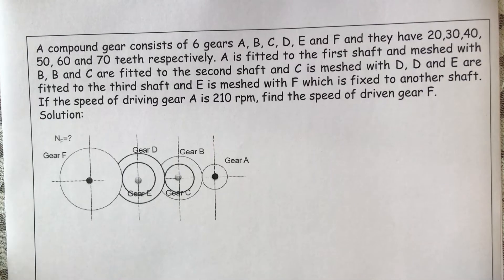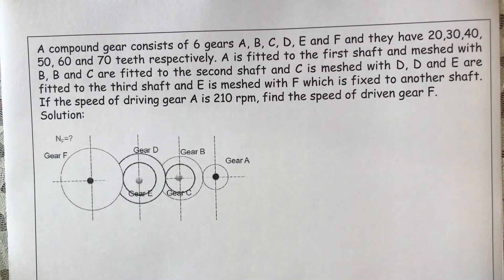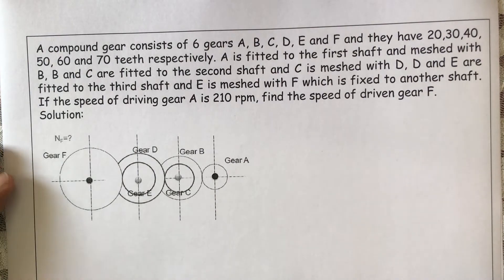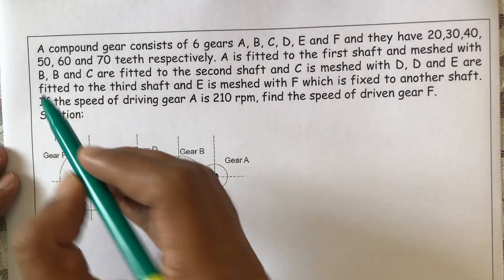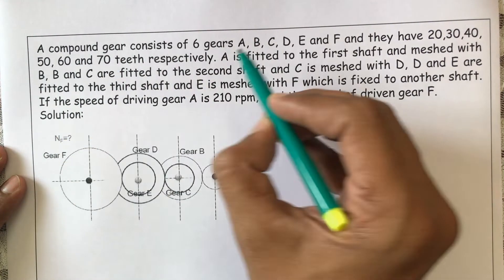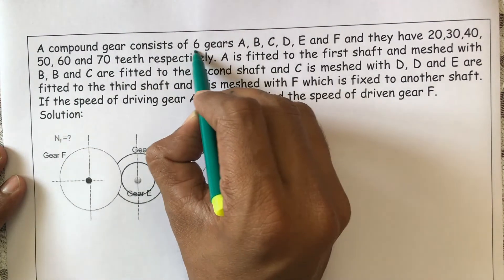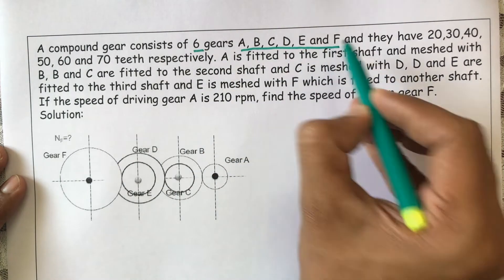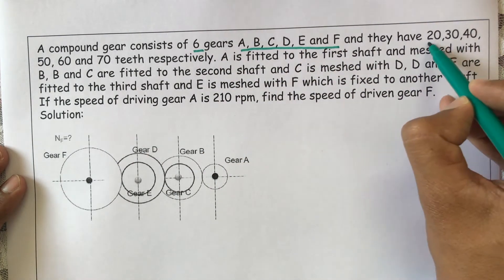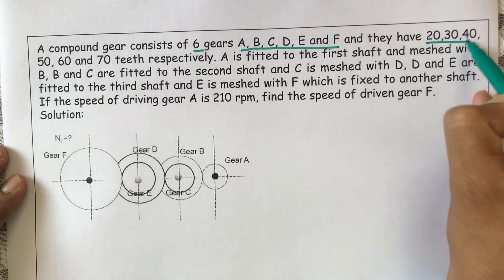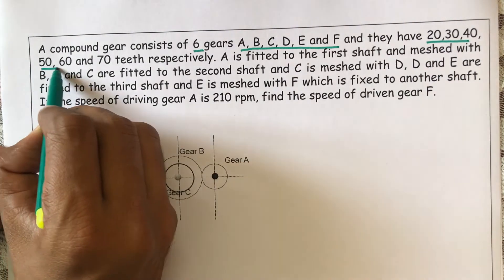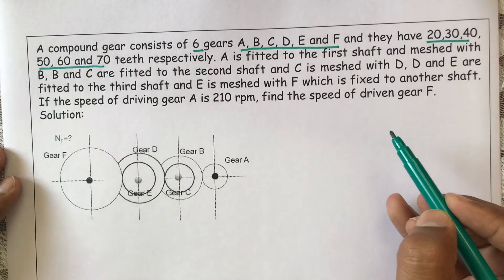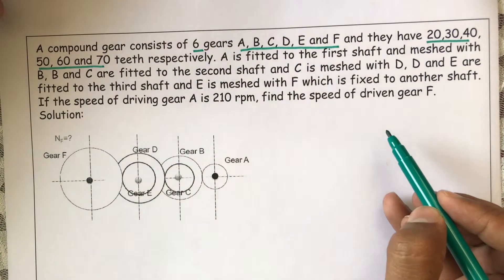Let us solve one more numerical on compound gear trains. Let us read the statement carefully. A compound gear train consists of six gears: A, B, C, D, E, and F. The number of teeth on those gears are 20, 30, 40, 50, 60, and 70 respectively. Now let us prepare the figure.